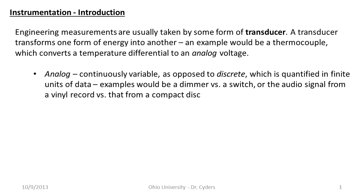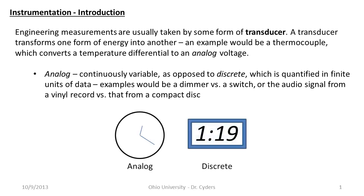Another example is the audio signal from a vinyl record versus that from a compact disc. Talk to any audiophile — somebody who really cares about the fidelity of sound — and they'll usually have strong opinions about the difference between digital sound stored on a compact disc as binary numbers, and a vinyl record played through tube amplifiers. It's very interesting to see the different applications for analog versus discrete signals.